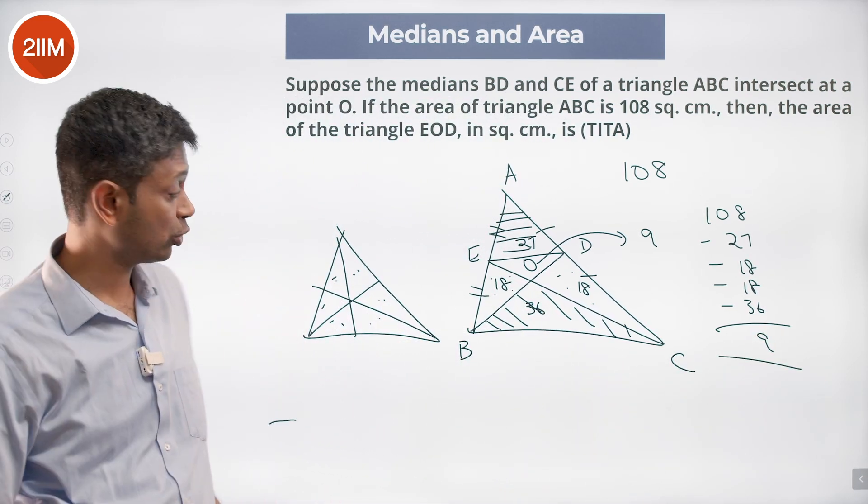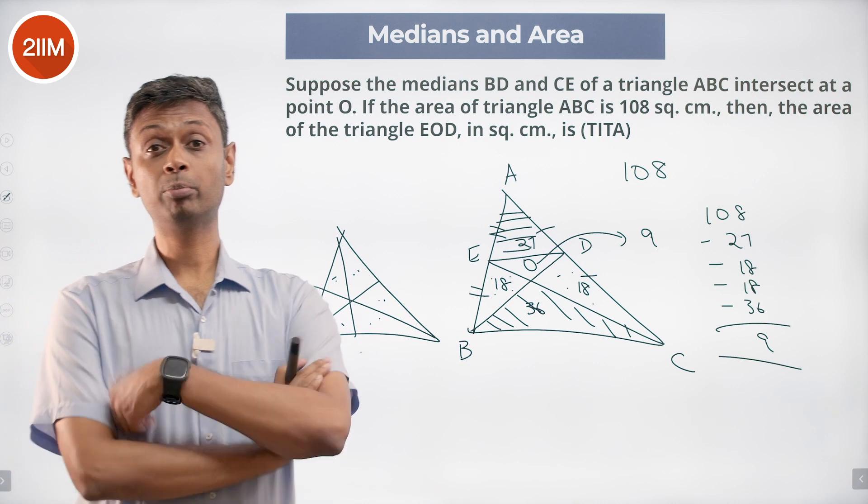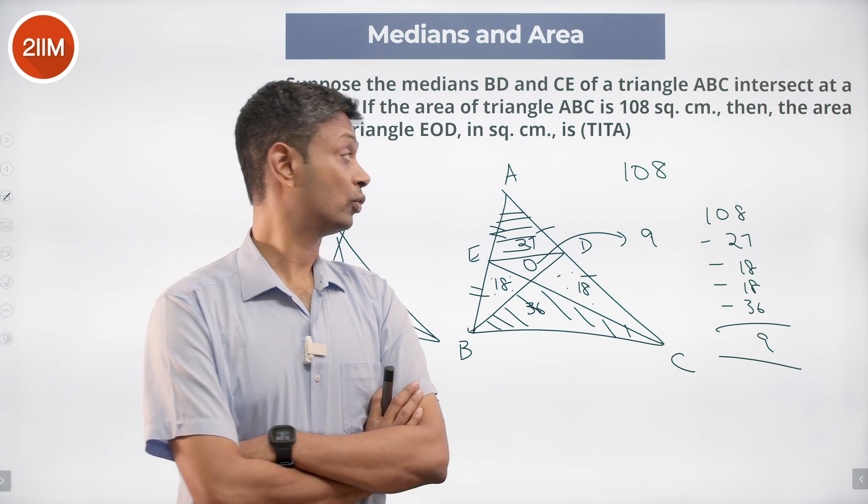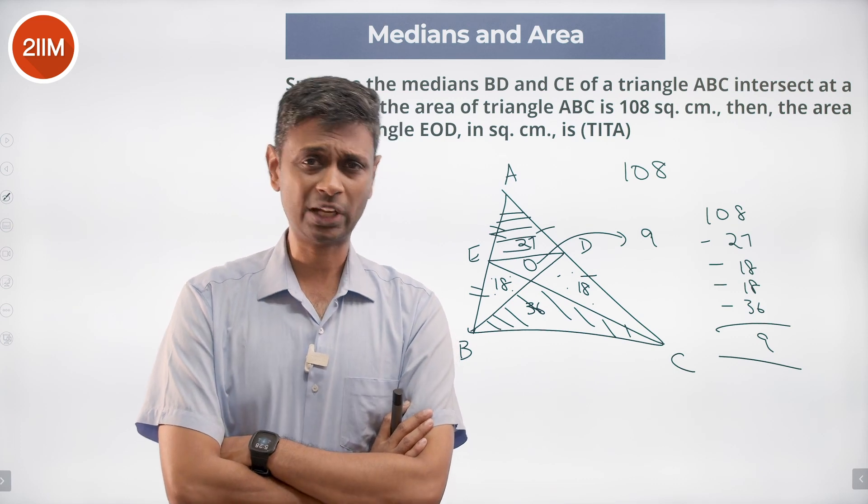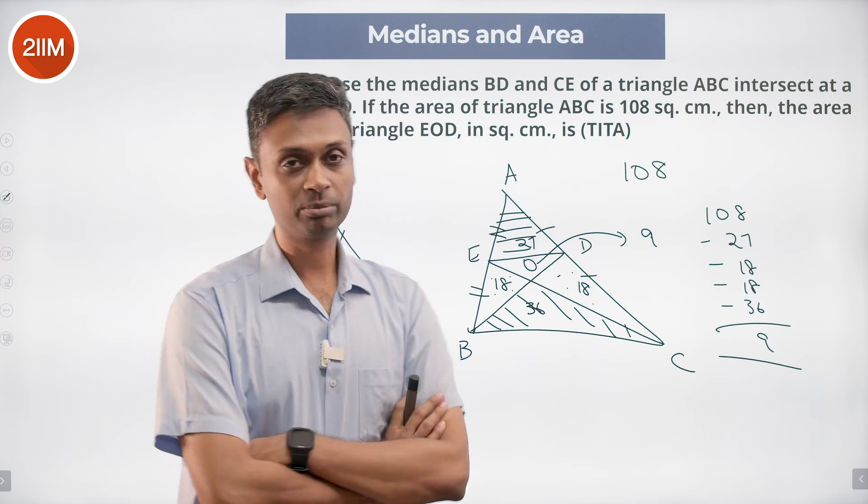Absolutely brilliant question. It really helped to know midpoint theorem and similarity—area of AED is one fourth. But if you can just chart all of those down without having to process anything, this question becomes nice and open.